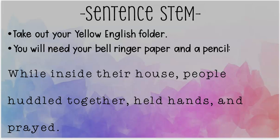Then we looked at the verbs — huddle, held, and prayed are all actions. We also identified the subject, which is who is doing the action, and the predicate, which is the action itself. The subject in this sentence is 'people' because the people are doing the actions. They huddled together, held hands, and prayed — that's the predicate. A complete sentence must start with a capital letter, end in punctuation, and have both a subject and a predicate.